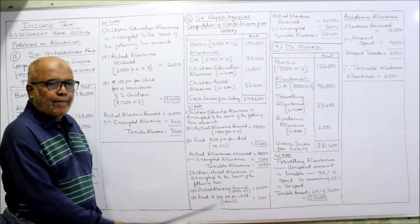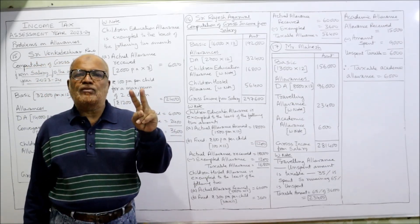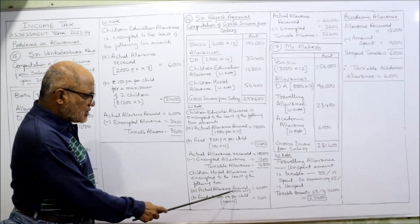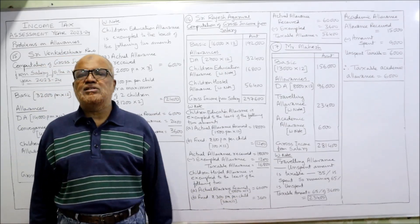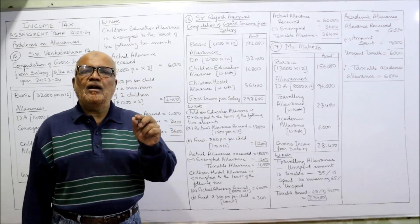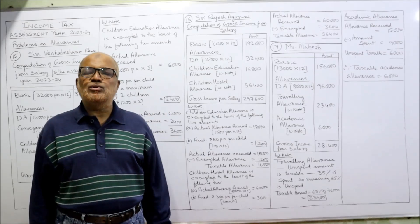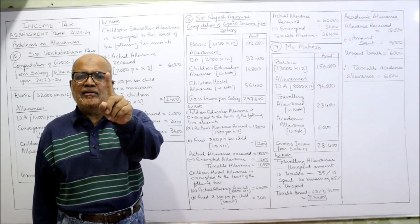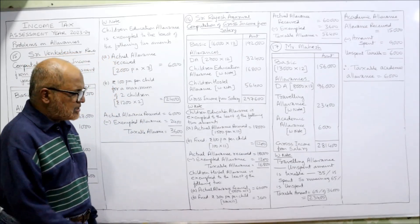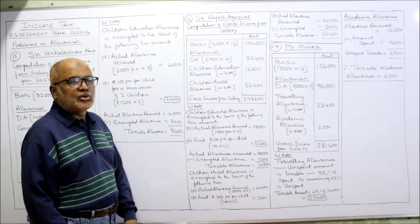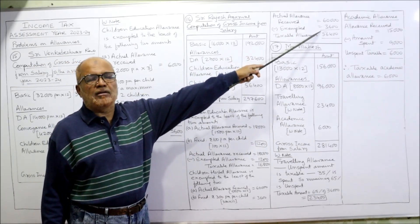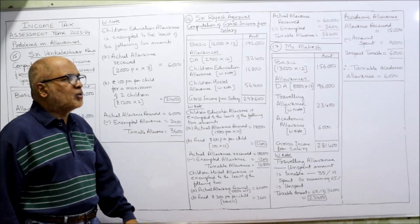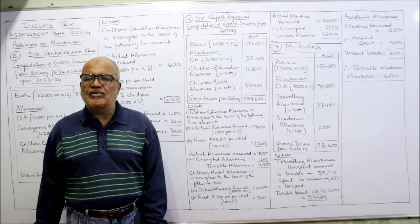Children hostel allowance is again exempted to the least of the following two. Actual allowance received: 5,000 per month, so 5,000 into 12 equals 60,000. The ceiling is 300 per month, meaning 300 into 12 equals 3,600 per annum for one child. He got the allowance only for one child, so exemption will be for one child only: 3,600. Therefore, 60,000 received minus 3,600 exempted equals 56,400 taxable. The total gross income from salary is 2,97,600.